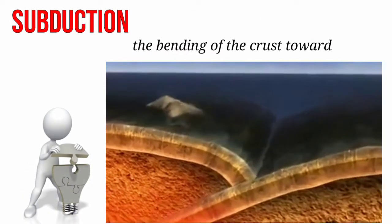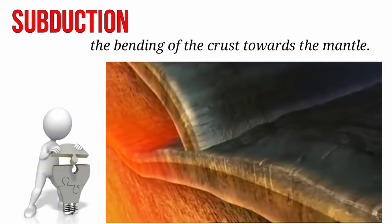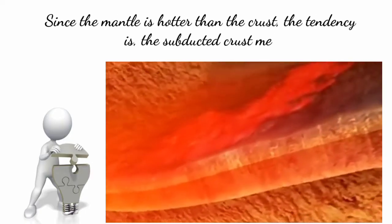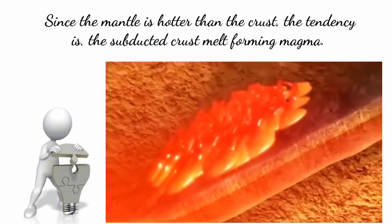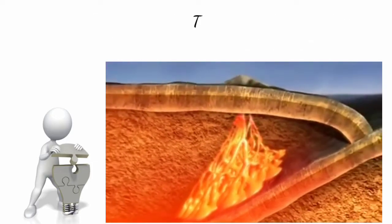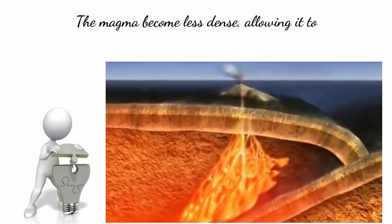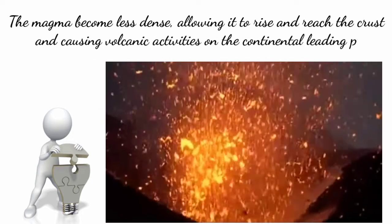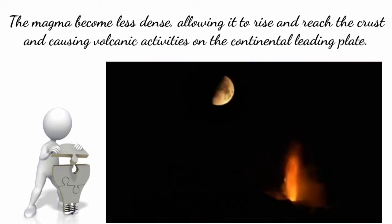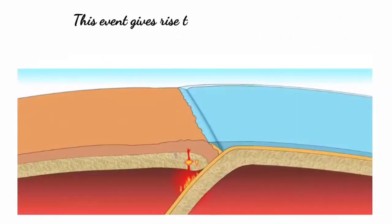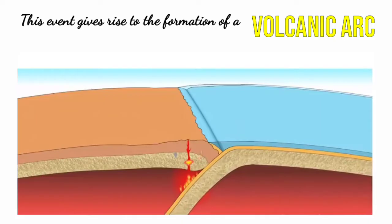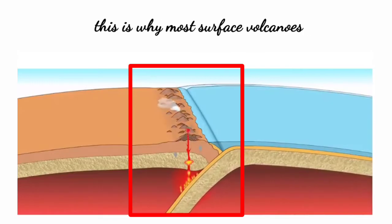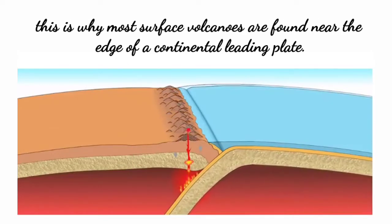Subduction refers to the bending of the crust towards the mantle of the Earth. Since the mantle is hotter than the crust, the tendency is that the subducted crust melts, forming magma — a molten material found beneath the surface of the Earth. The magma becomes less dense, allowing it to rise and reach the crust, causing volcanic activities on the continental leading plate. This event gives rise to the formation of a volcanic arc.